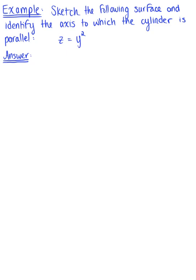Sketch the following surface and identify the axis to which the cylinder is parallel. Looking at this equation, we have z equals y squared. The first thing you want to note is: is there a variable missing? We have z, we have y, and we see that x is missing or is absent.